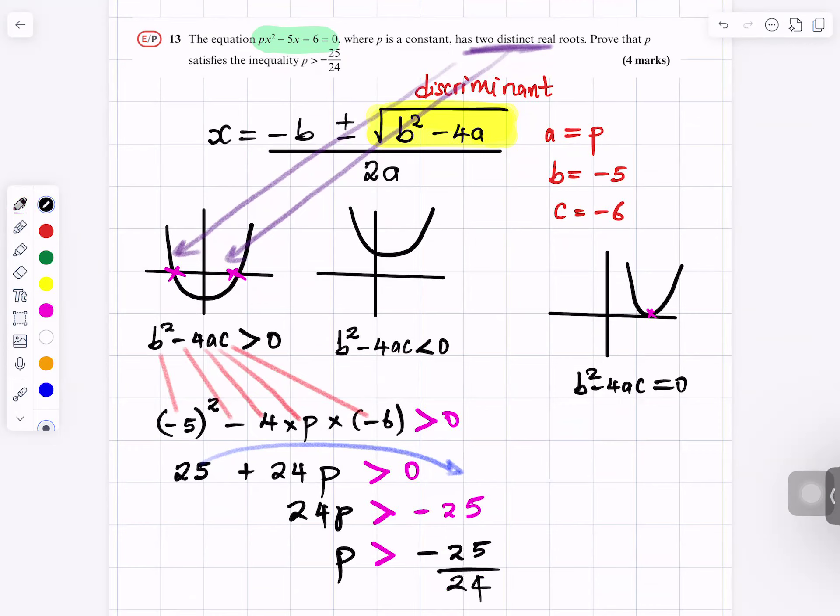That's four marks for a past exam paper. And that's what they wanted you to show. So P is greater than minus 25 over 24, which is what they wanted you to show. And when you show something that is right, you can write the word Q-E-D. It's Latin, which says Quod erat demonstrandum. It means in English, as required to show. The question was for us to show that P is greater than minus 25 over 24.